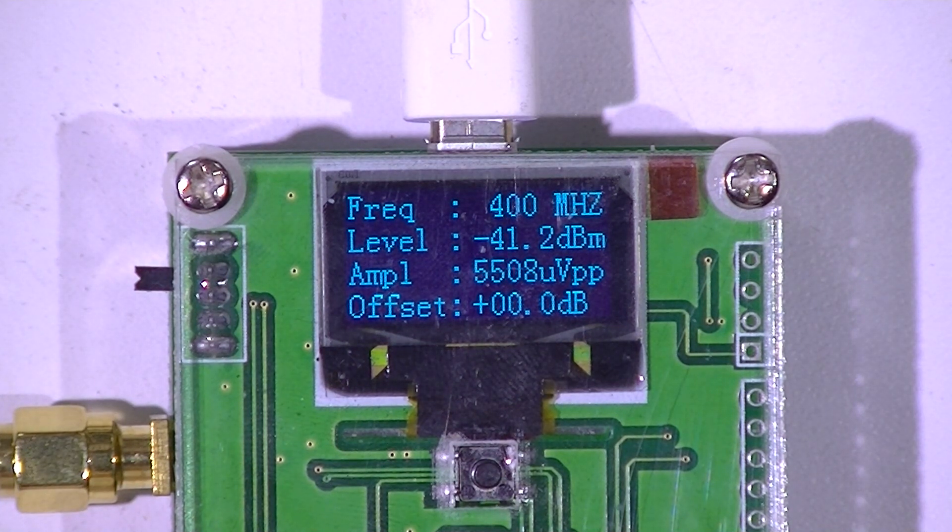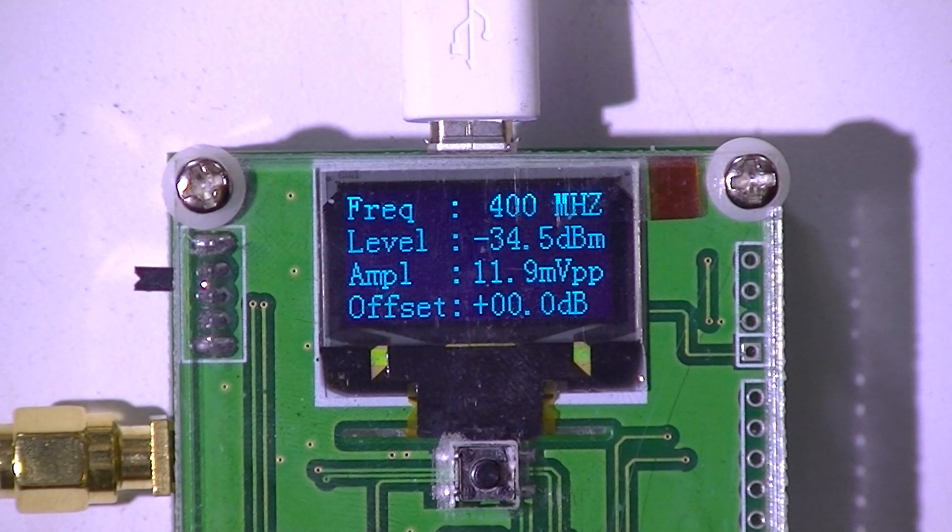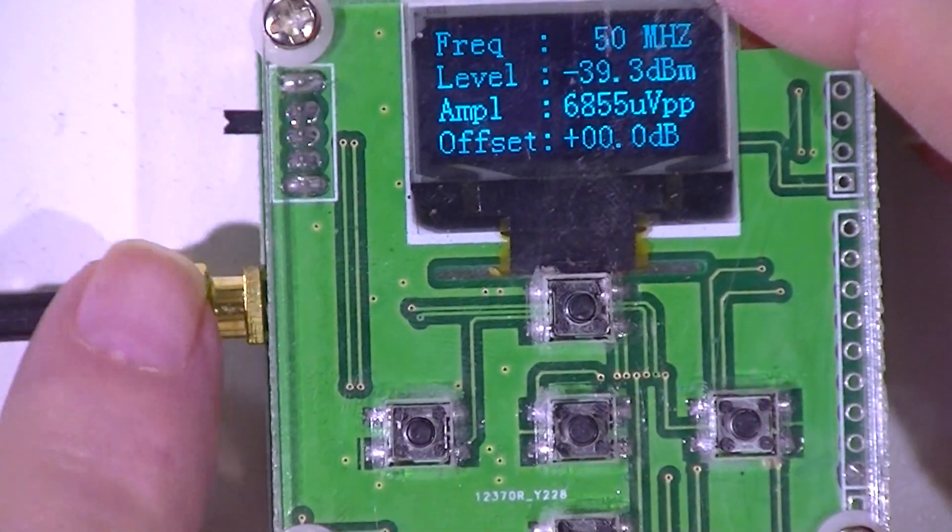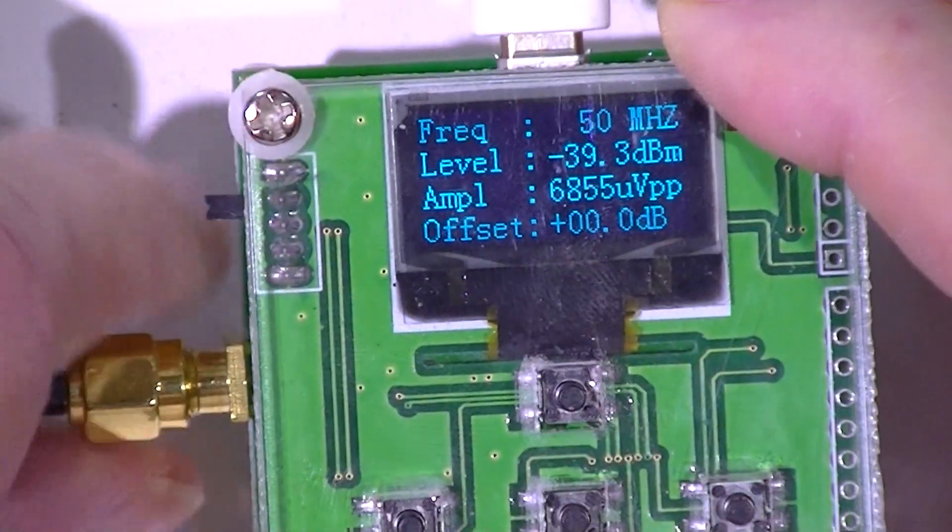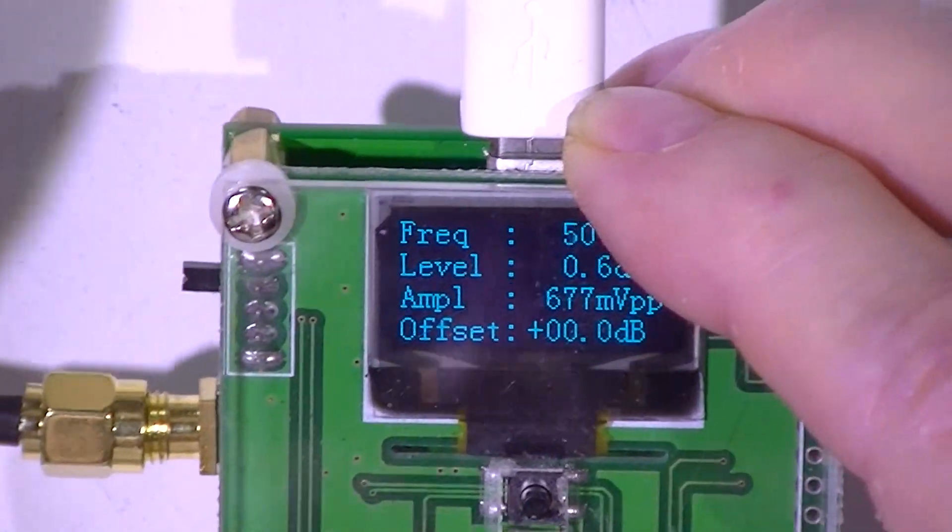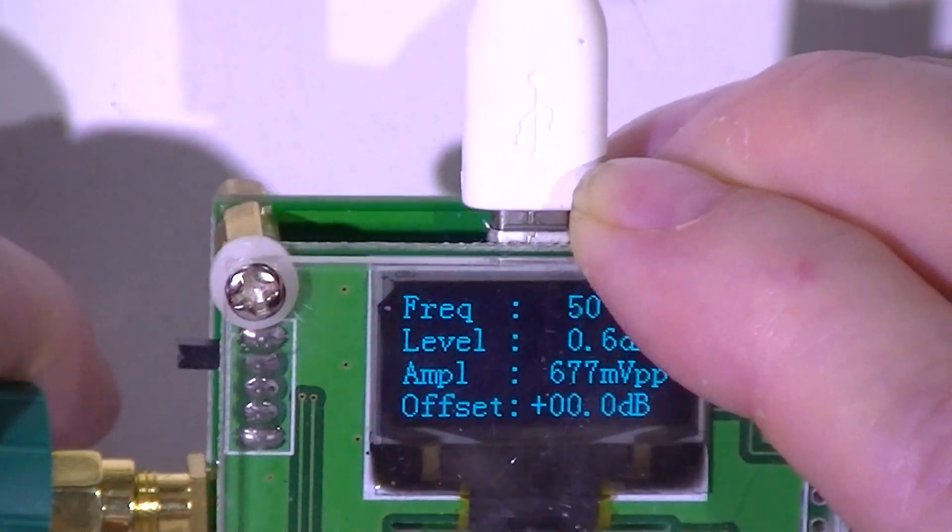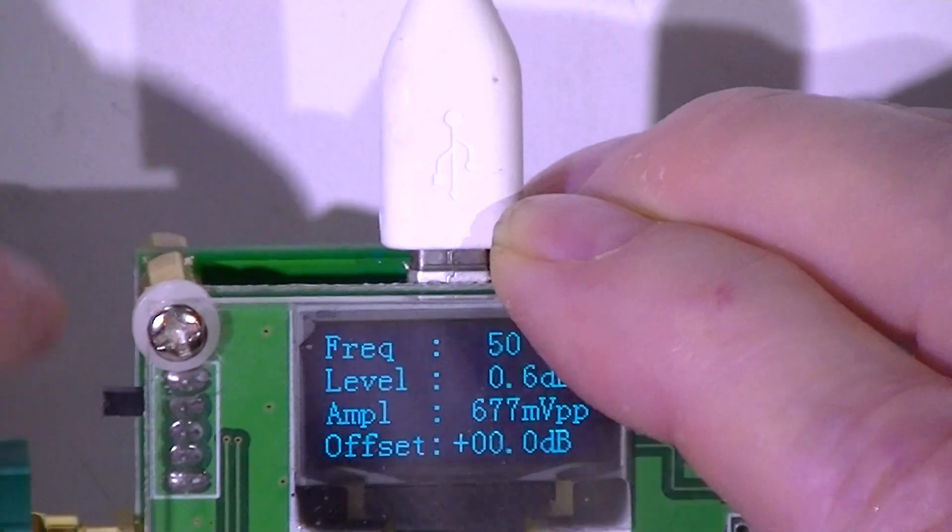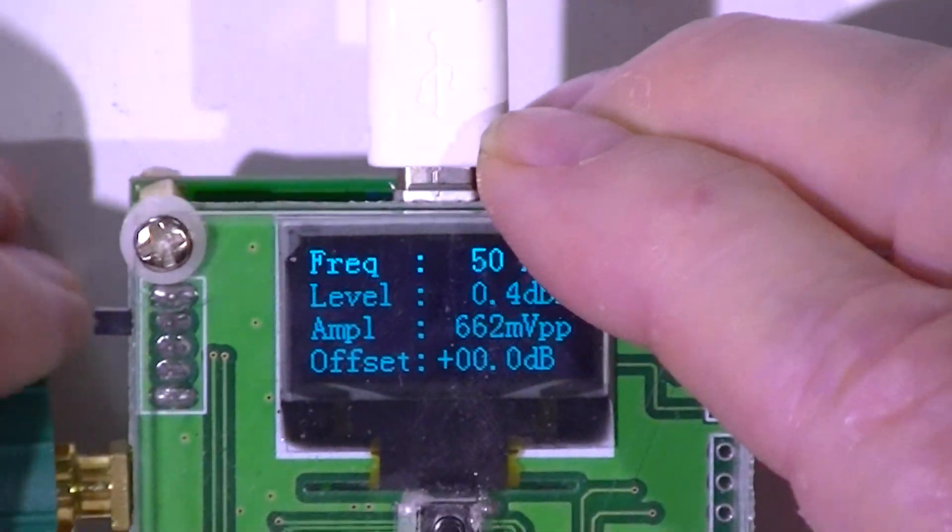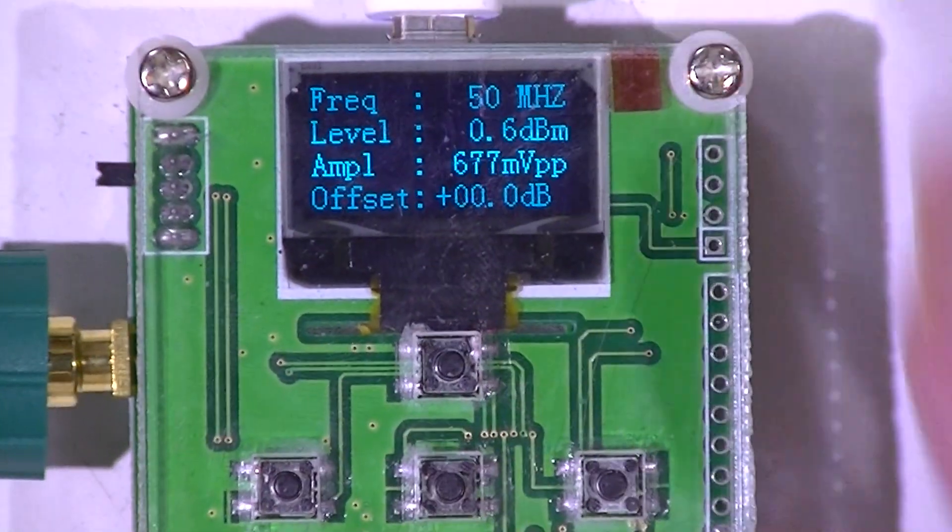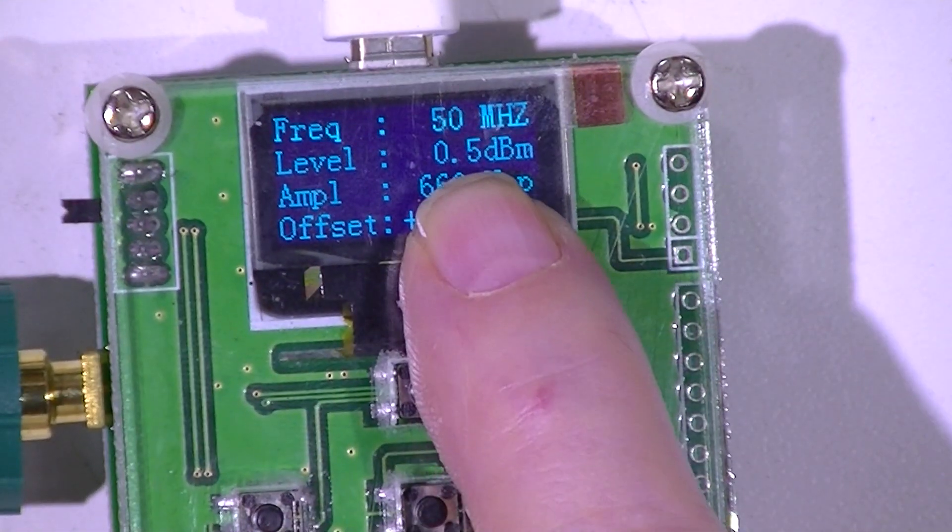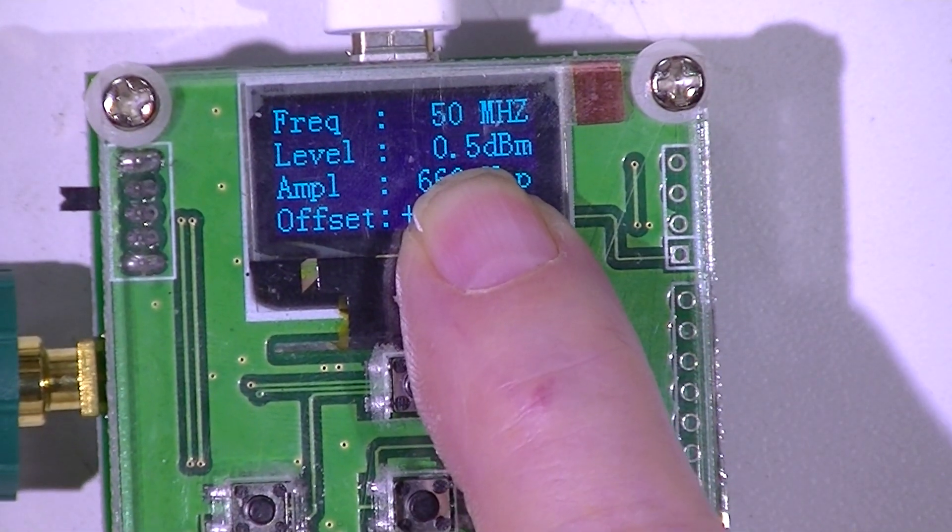I'll take the signal generator down to 50 megahertz. I'll reconnect the signal generator to the input, and we'll see the signal generator is about a half a dBm high.